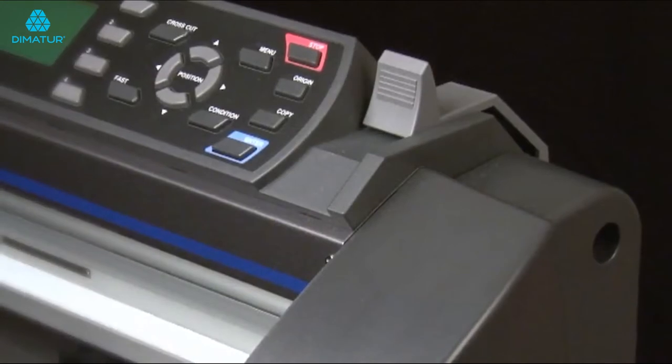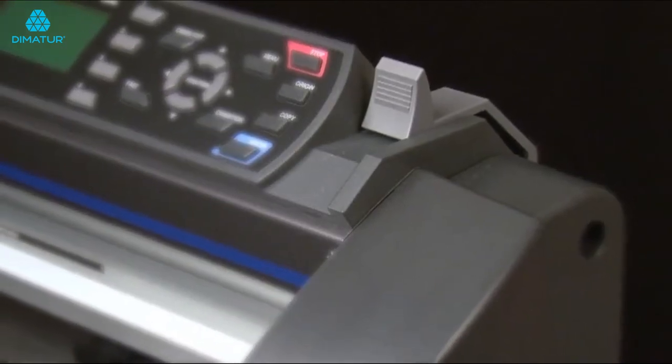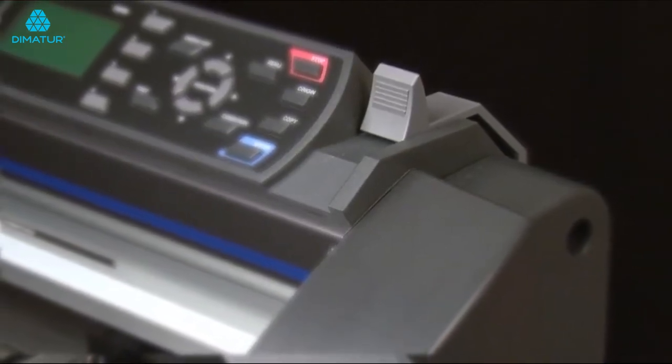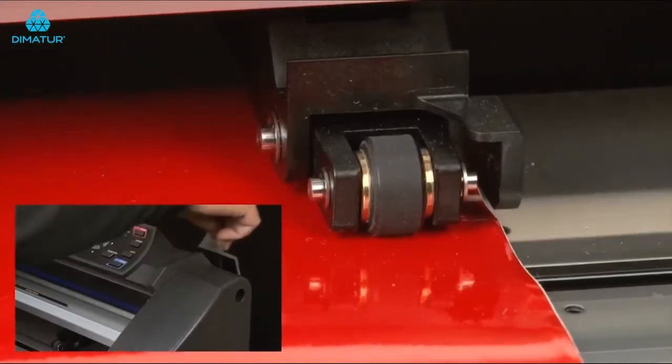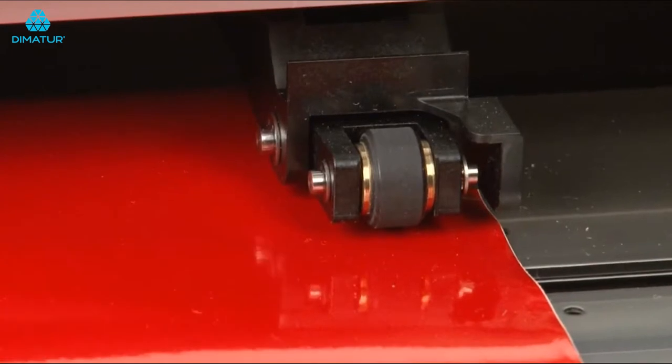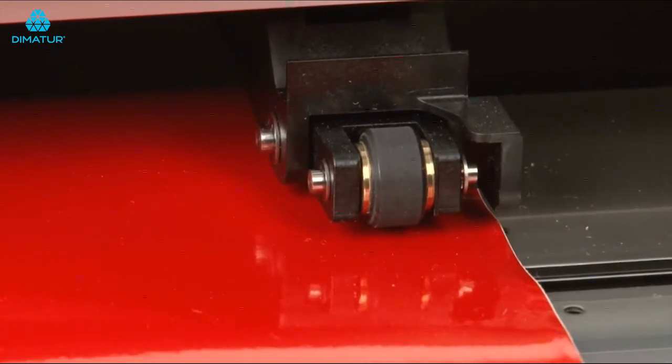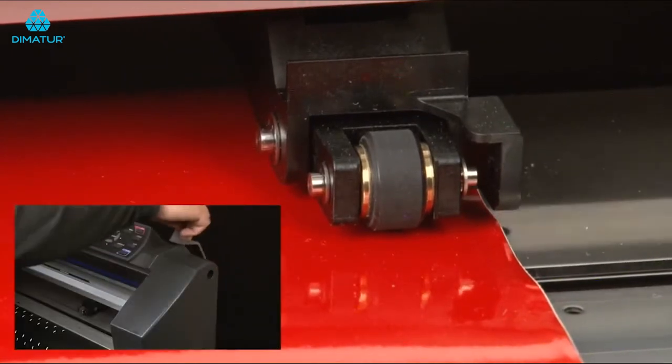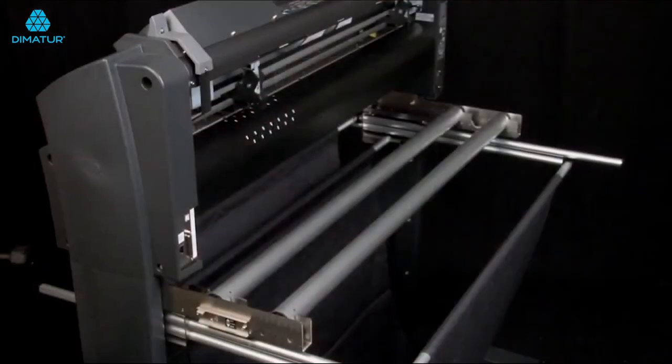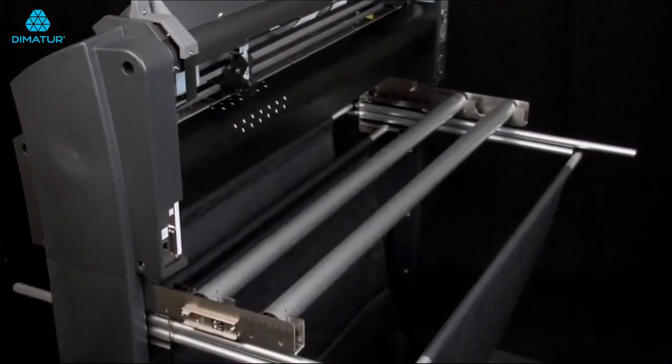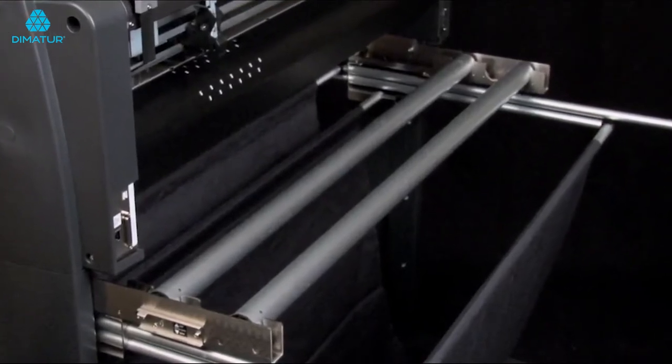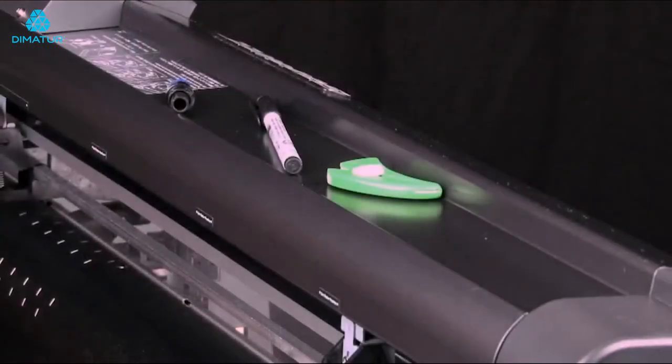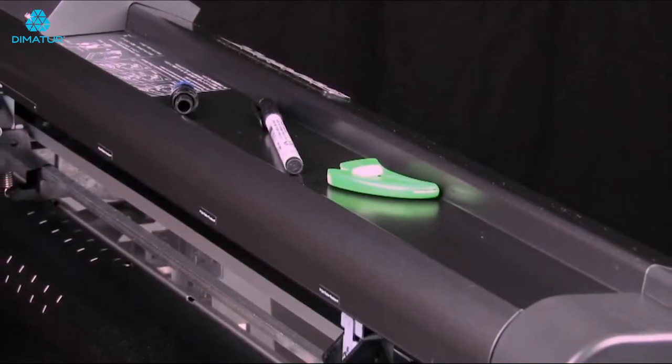Just behind the control panel is the media set lever. This lever is what raises and lowers the push rollers onto the grit rollers. When the lever is pushed back, this raises the push rollers. It is only in this position that the media can be loaded. At the back end of the cutter are the media stock rollers. This is where you place your rolls of media or material.